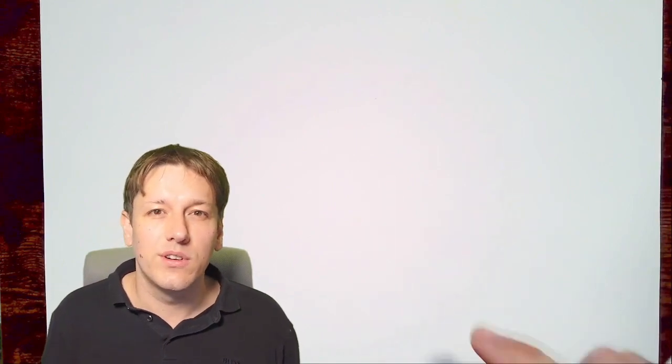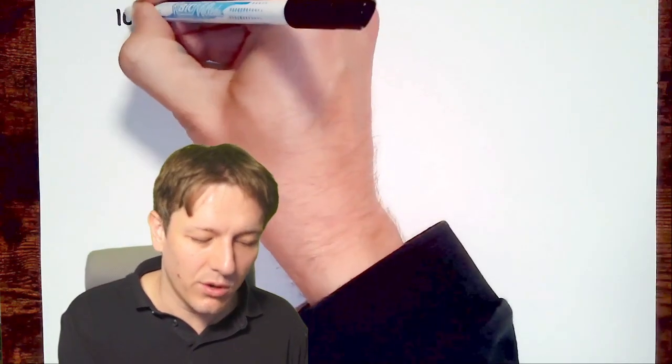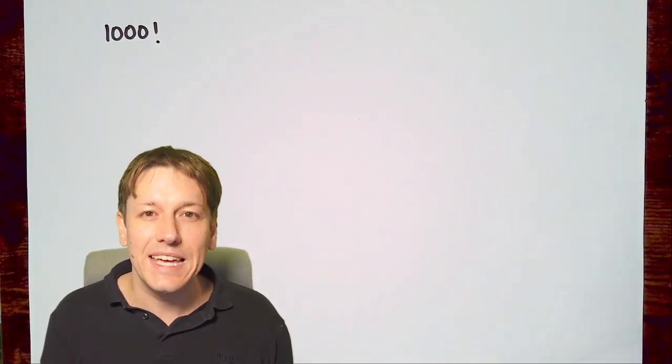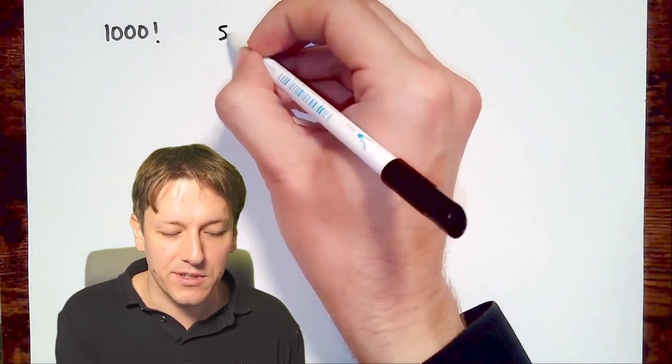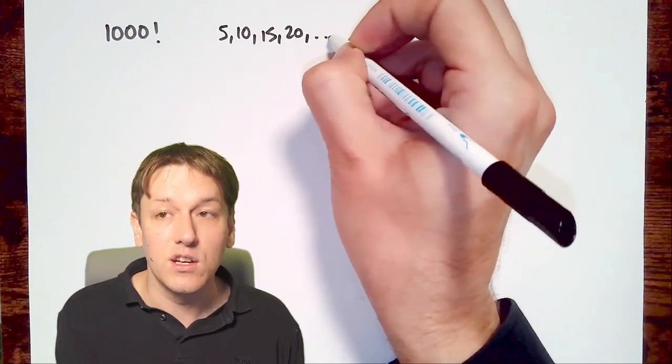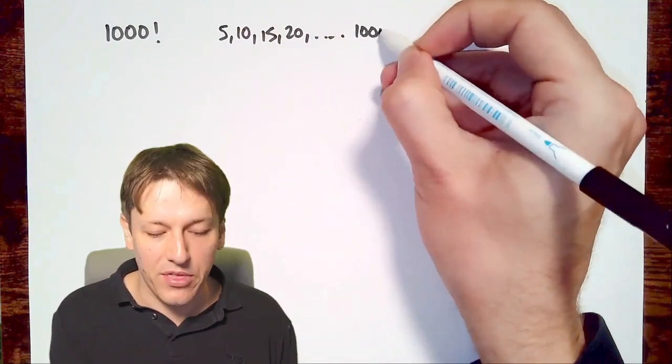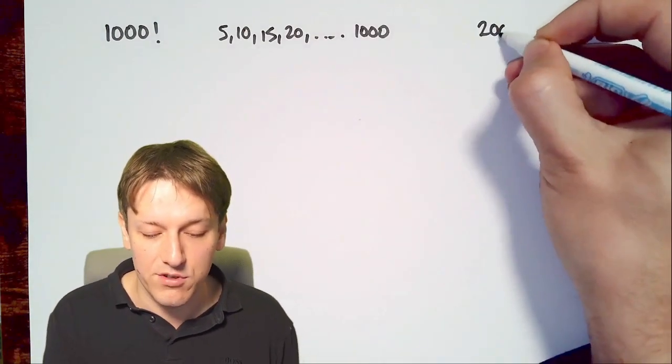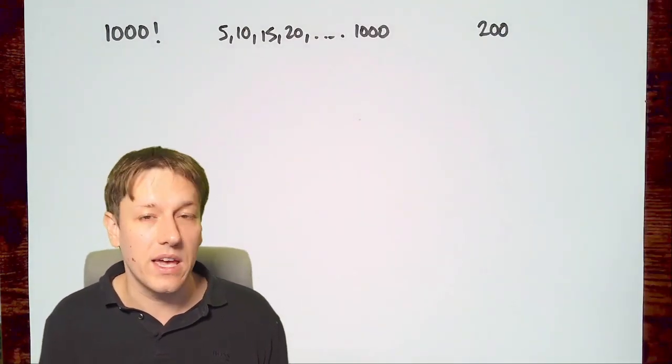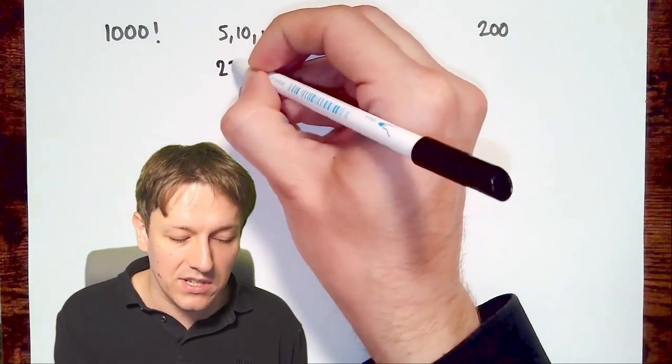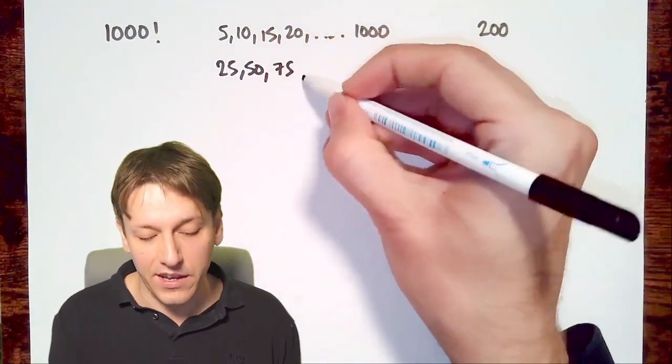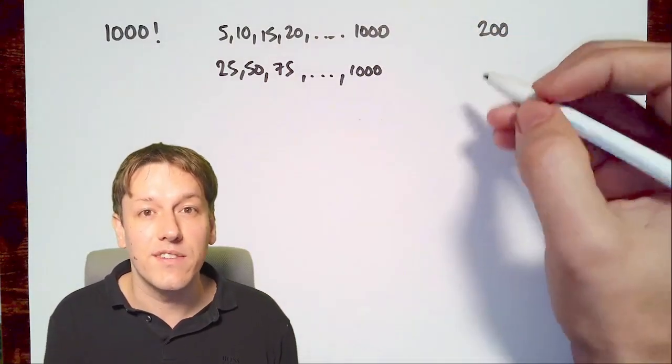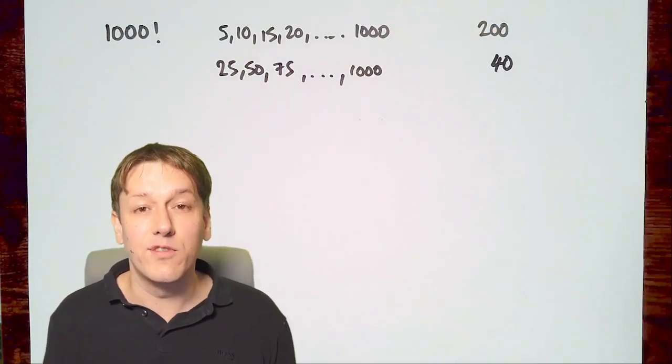Now, armed with that, we can go on and think about 1000 factorial, or any other larger number that we want to. So for 1000 factorial, we will get zeros every time we hit multiples of 5. So at 5, 10, 15, 20, and so on, all the way up to 1000. 1000 divided by 5 is 200, so there'll be 200 zeros that arise in that way. Again, we'll get an extra zero every time we hit a multiple of 25 for exactly the same reason. And 1000 divided by 25 is 40, so there will be 40 of those.